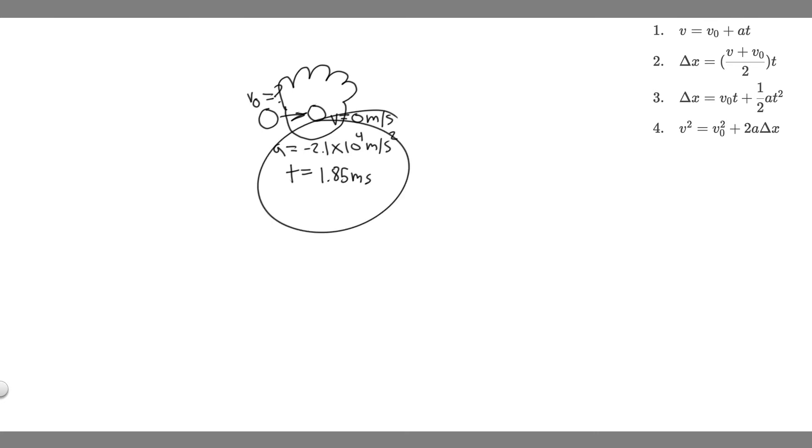So that's the information we're given. We're going to solve for this by using one of the kinematic equations. The next step you always want to do is write down the given. So we're solving for the initial velocity: v sub 0 equals question mark. We know the final velocity is equal to 0. We know the acceleration is negative 2.1 times 10 to the 4 meters per second squared, and we know t is 1.85 milliseconds.